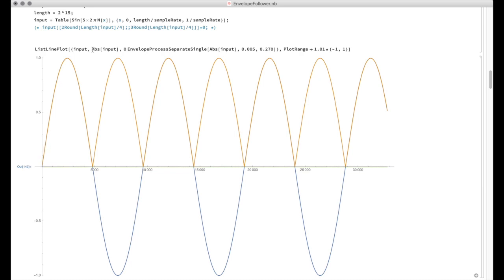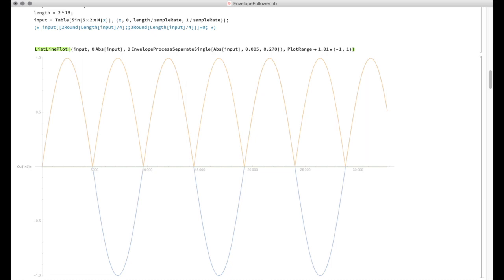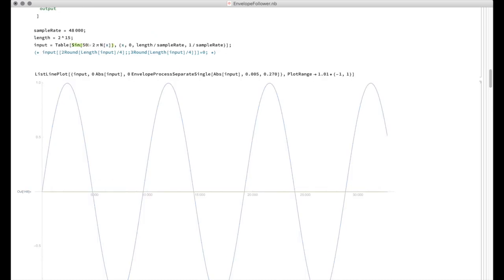I think the ideal volume envelope we'd like to see is something that follows this blue line up, but when it gets to the top here, instead of coming down again, we'd like it to go straight across and connect the peaks because... let's look at a higher frequency wave.